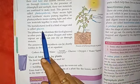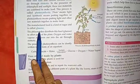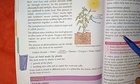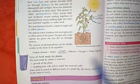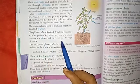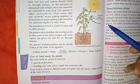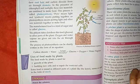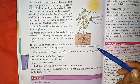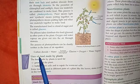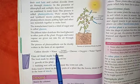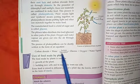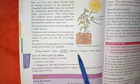The food that plants make through photosynthesis is called glucose. The equation is: carbon dioxide plus water, in the presence of sunlight and chlorophyll, produces glucose. Oxygen and water vapor are also released as byproducts.